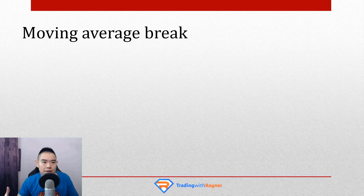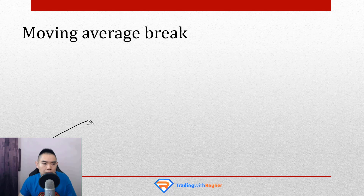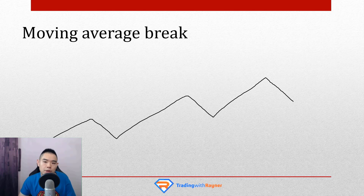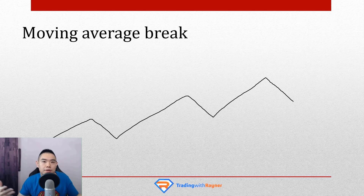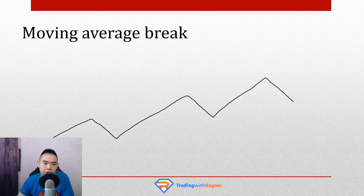I want to share with you another technique that you can use to time your entry. This technique is what I call the moving average break. To illustrate how this works, imagine if the market is in an uptrend — a series of higher highs and higher lows — and then it makes a pullback. The question is, at which point of the pullback do you enter a trade? Earlier we talked about candlestick patterns — tools like hammer, bullish engulfing pattern — to time your entry on the pullback. The other technique you can use is what I call the moving average break.